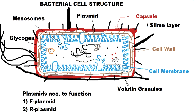That was all about bacterial cell structure. In the next video we are going to talk about the structure of the cell wall in detail and how it can be used to classify bacteria into two types: gram positive and gram negative. See you in the next video, thank you.